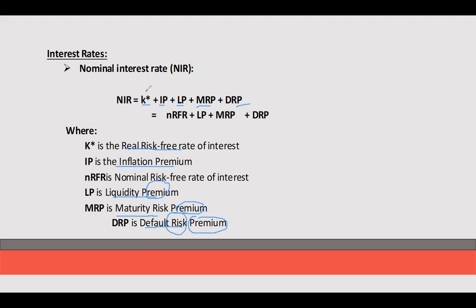When we add the real risk-free rate and inflation premium together, this is also known as the nominal risk-free rate, which is equivalent to your treasury bill rate — the lowest or minimum rate of return for every debt security investment.